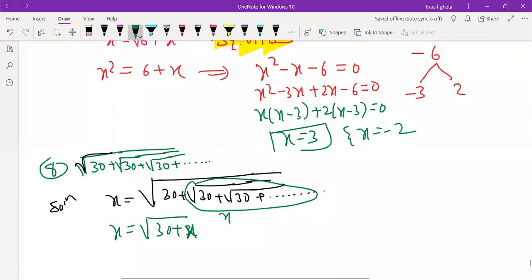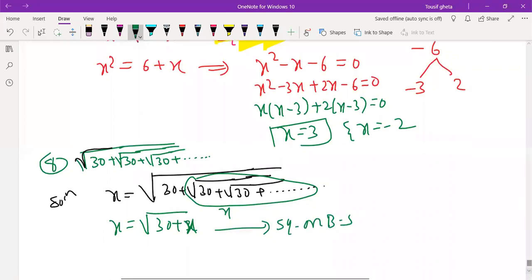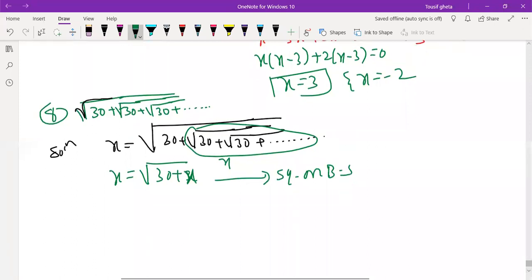And we will write square on both sides. So we will get x square is equal to 30 plus x.